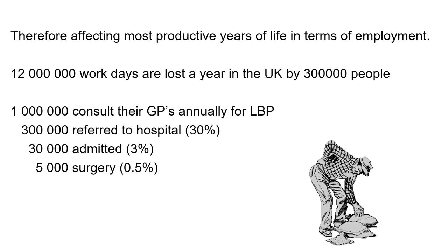In the United Kingdom, with a public-based health system, 12 million work days are lost a year by 300,000 people — a population similar to the size of South Africa. A million of these patients consult their GPs a year for back pain, of which 300,000 are referred to hospital, 30,000 admitted, and only 5,000 came to surgery. This might be a little low being a public health system; if there was private access, maybe it would be a little higher.